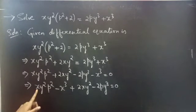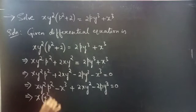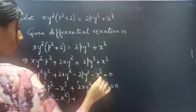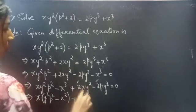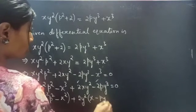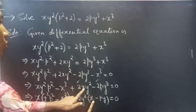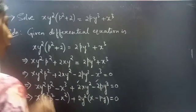From the first two terms you can take x common. Taking x common from the first two terms you get x(y²p² - x²). We have 2 and y² common in the last two terms, so take 2y² common to get 2y²(x - py).